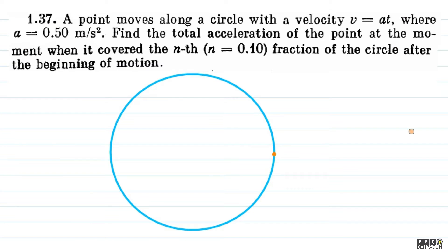Let's try to analyze the problem. Basically, it says that the point moves along the circle, and the velocity — since it is not written in bold (vector notation) — we can assume velocity here means speed. So Irodov is commenting on the speed: speed v equals at, where a = 0.50 meter per second square and t is time.